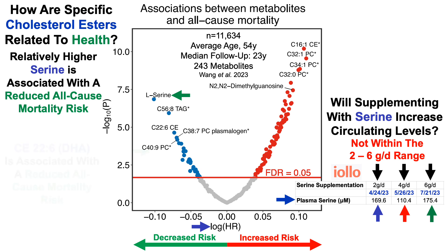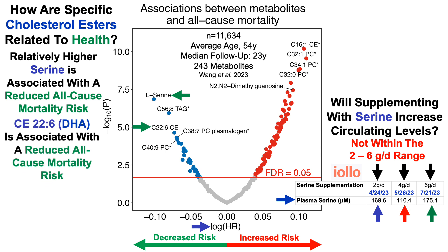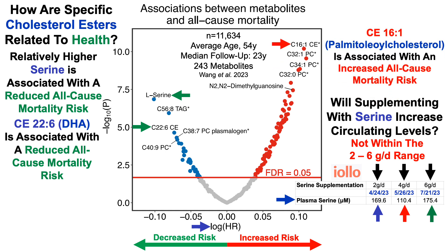Back to the cholesterol ester story: CE 22:6, the DHA cholesterol ester, is associated with a significantly reduced all-cause mortality risk. Conversely, CE 16:1 — 16 carbons, one double bond — is significantly associated with an increased all-cause mortality risk. These two cholesterol esters move in opposite directions, supporting the rationale not to treat all cholesterol esters as one group, as they may have divergent effects on all-cause mortality risk and possibly epigenetic age.